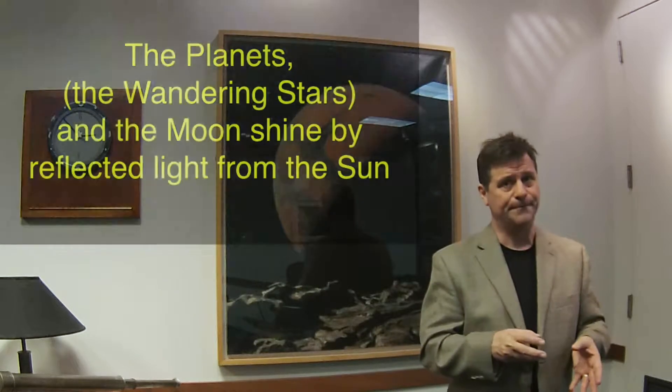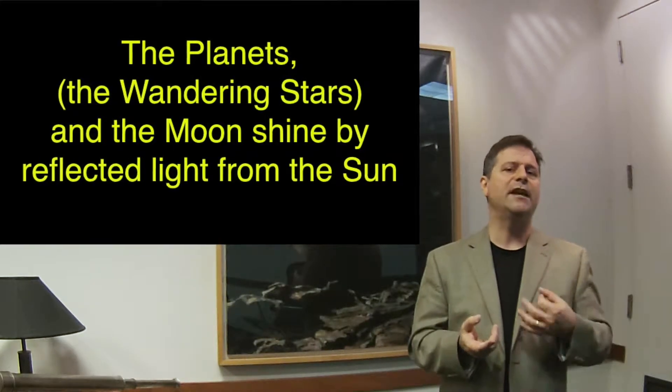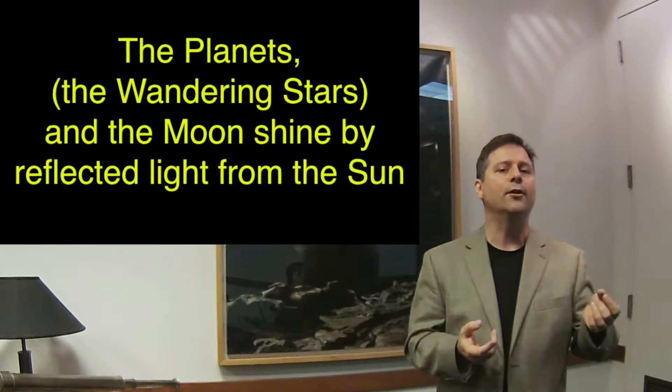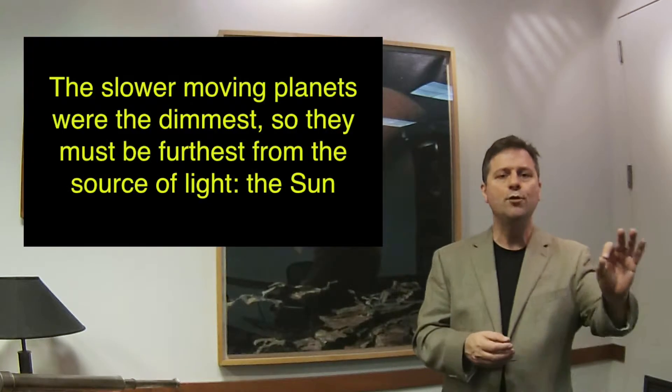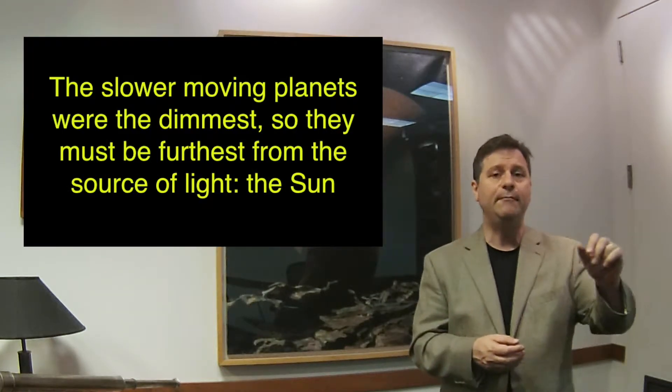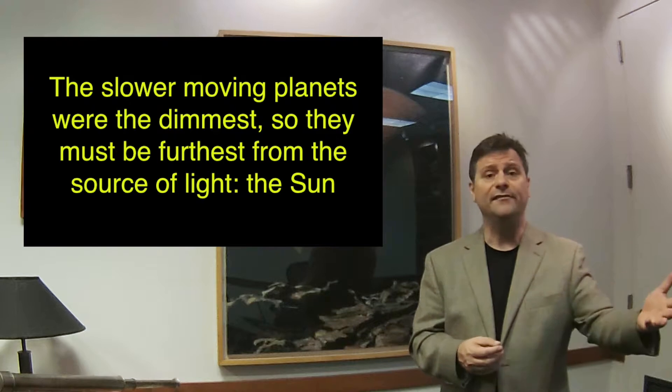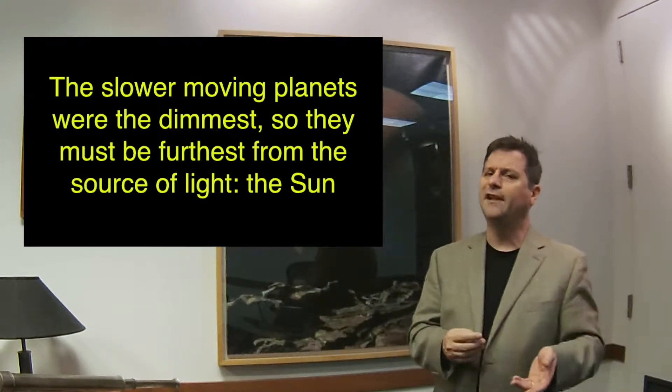We also know, or at least appear to know, that the planets reflect light. They don't have their own light. Now, that is an interesting statement in and of itself, and it's hard to really determine that from the sky. But the ancients thought and noticed that the slower moving planets were also the dimmest. So they reasoned that if they're the dimmest, they must be the furthest.